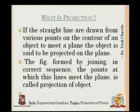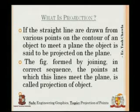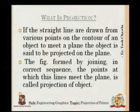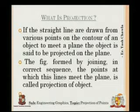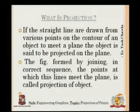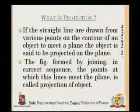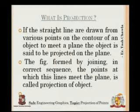Now, what is projection? First I will read you the complicated definition given in books: 'If straight lines are drawn from various points on the contour of an object to meet a plane, the object is said to be projected on that plane. The figure formed by joining in correct sequence the points at which the lines meet the plane is called the projection of the object.' Very complicated — but actually very simple.